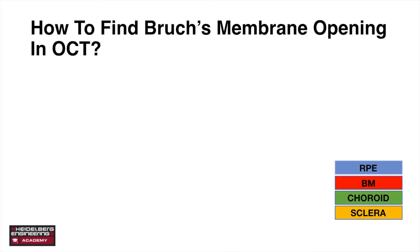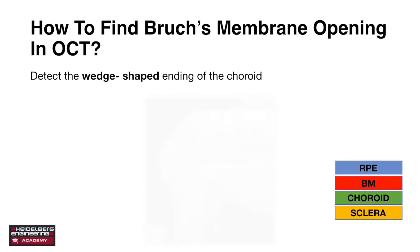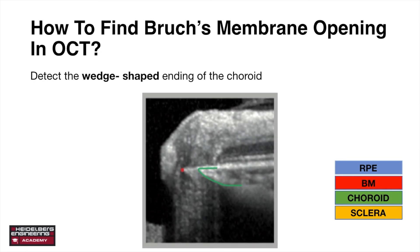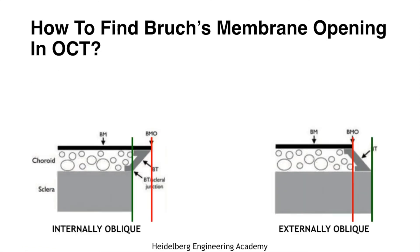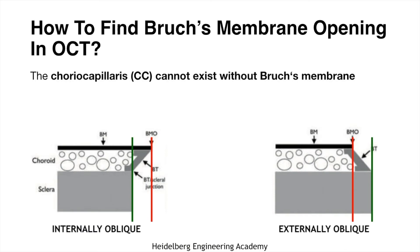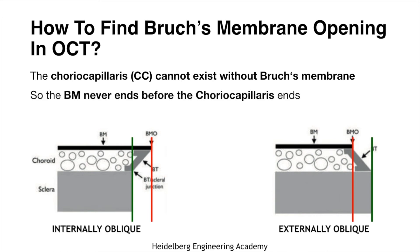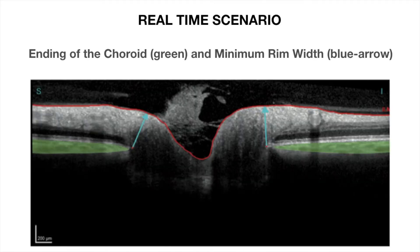How to find Bruch's membrane opening in OCT: first, detect the green wedge-shaped ending of the choroid — the BMO will be seen just adjacent to it. Bruch's membrane never ends before the choriocapillaris ending, whether in an internally oblique or externally oblique configuration, but Bruch's membrane can extend further than the choriocapillaris. In a real-time scenario, the ending of the choroid is shown in green and the minimum rim width is shown by the blue arrow.